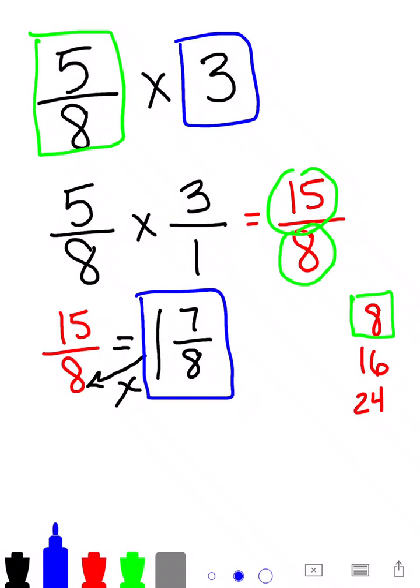There's another way to take that mixed number, which is 1 and 7 8ths, and turn it back into an improper fraction. So I'm going to show you that just so you can see why 1 and 7 8ths is the same as 15 over 8.